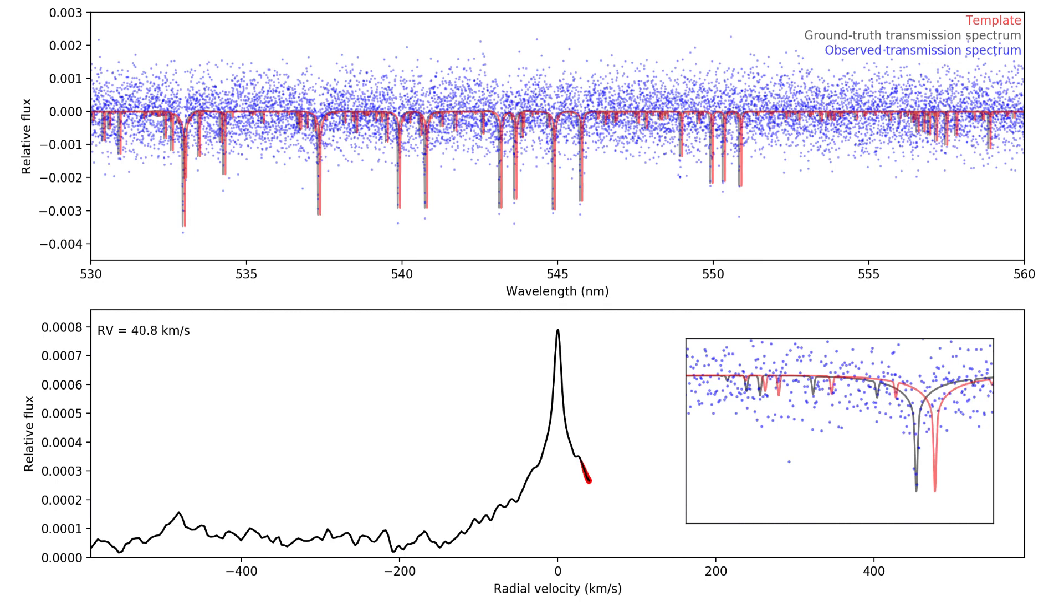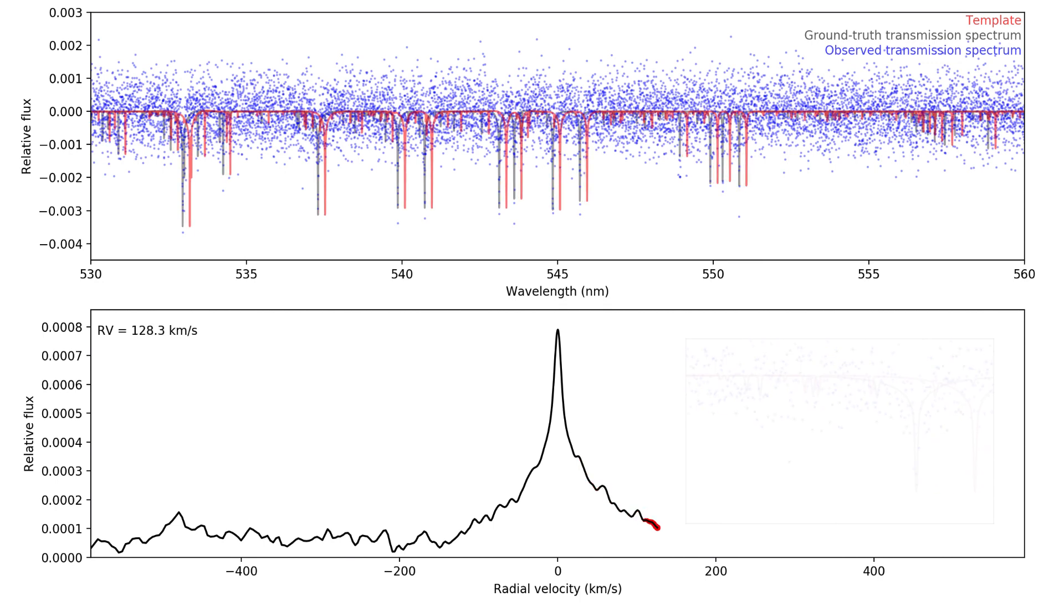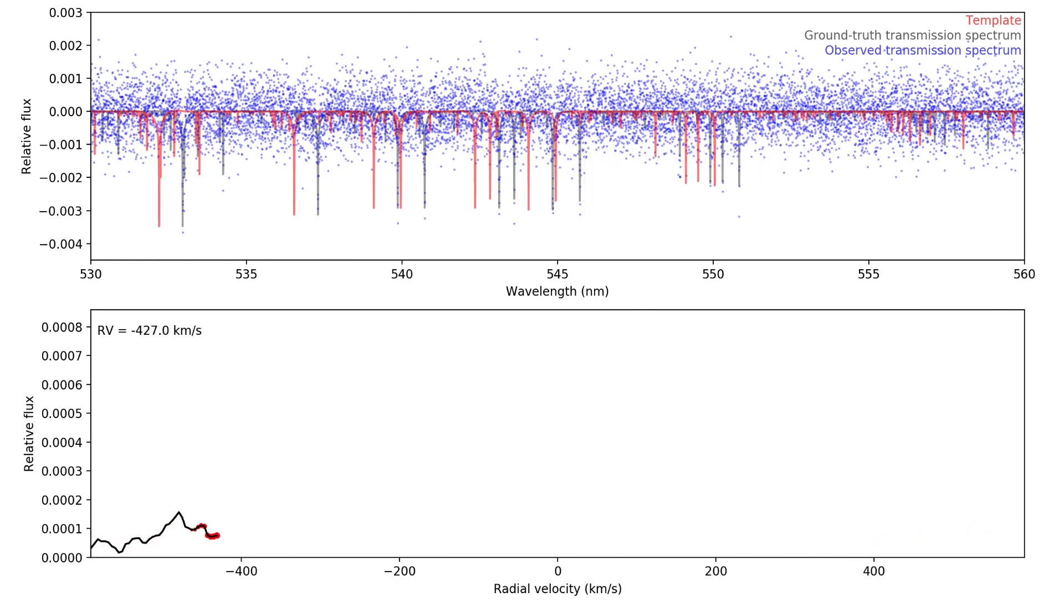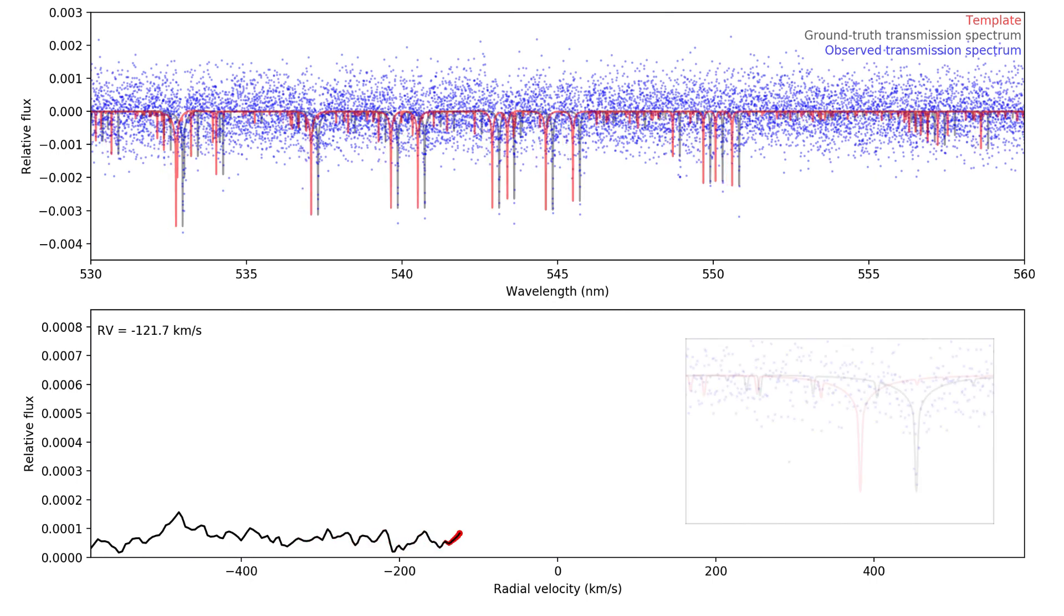Even though the individual absorption lines of iron may be drowned out in the photon noise of the star, if these lines are plentiful, the noise in the cross-correlation function will be greatly reduced, allowing us to confidently confirm that iron is present in the atmosphere of this planet.